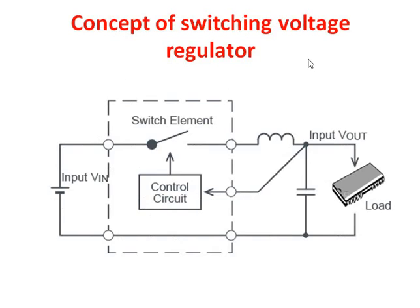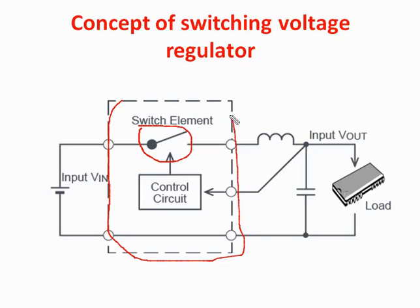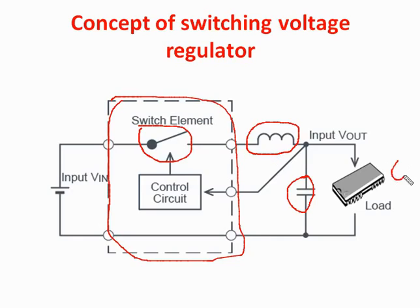To understand the concept of the switching voltage regulator, consider this basic diagram. Here we have a load, an input voltage, and a switching element — which may be a MOSFET or transistor. The output is sensed by the control circuit, which turns the switching device on and off. An inductor filters out ripple current, and a capacitor filters out ripple voltage to maintain a constant voltage. Together, the inductor and capacitor act as the filter elements to give constant DC output.